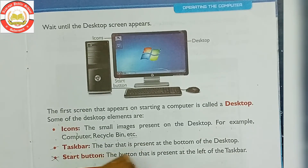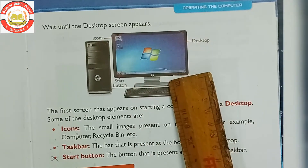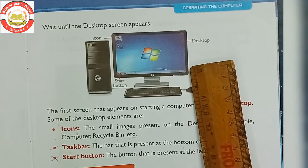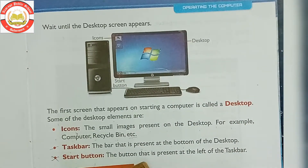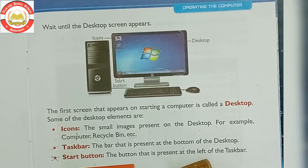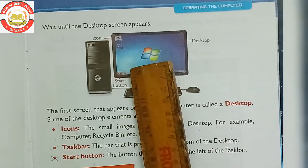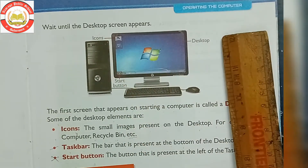The task bar is the bar that is present at the bottom of the desktop. The desktop's bottom side strip is called the task bar. The start button is the button present at the left side of the task bar.